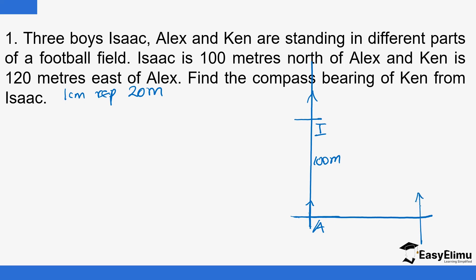Get the north direction — make sure this is perfectly vertical and the horizontal is perfectly horizontal. So Ken is to the east of Alex. The angle in between east and north is 90 degrees; all these ones are 90 degrees. Make sure the vertical is vertical and horizontal is just horizontal. We need to find the compass bearing of Ken from Isaac. So you basically join the two points, and the angle we are looking for — we are looking for the compass bearing, starting from north going to east.